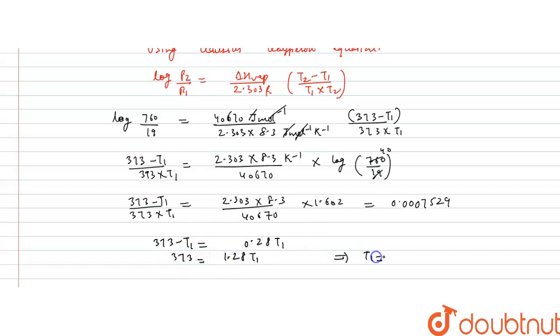So T1 will be 373 divided by 1.28. This value equals 291.4, and this value is in Kelvin.